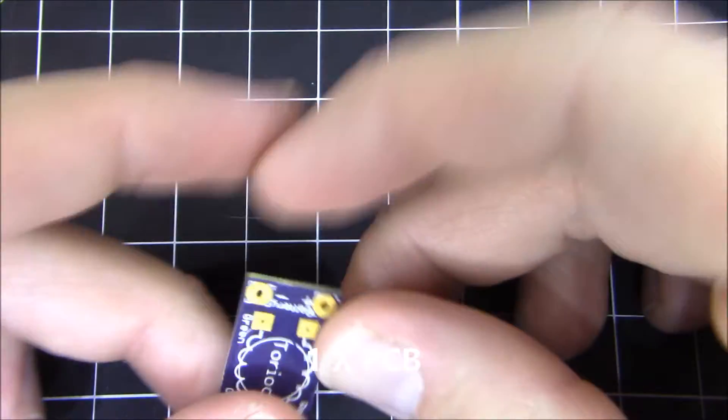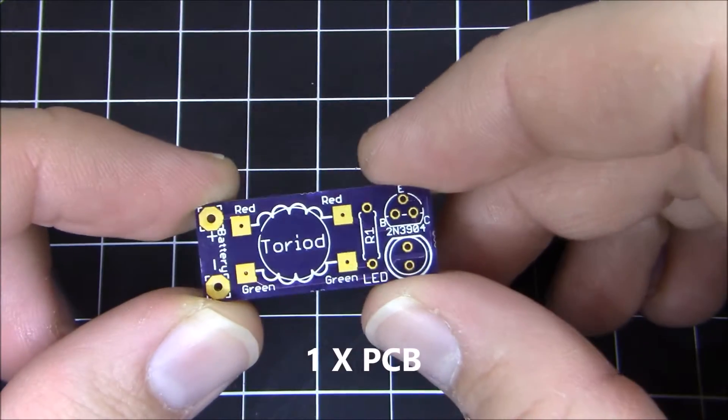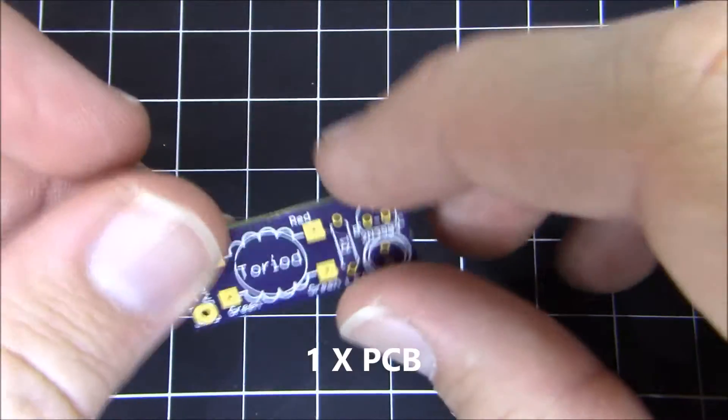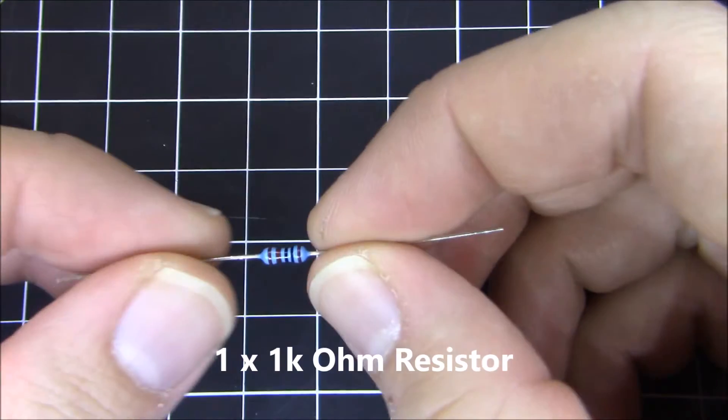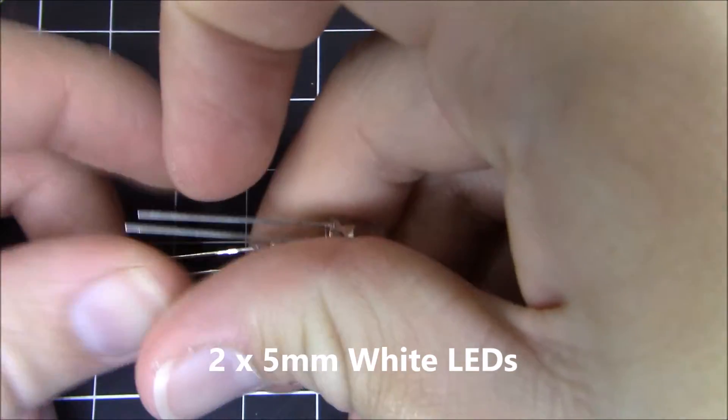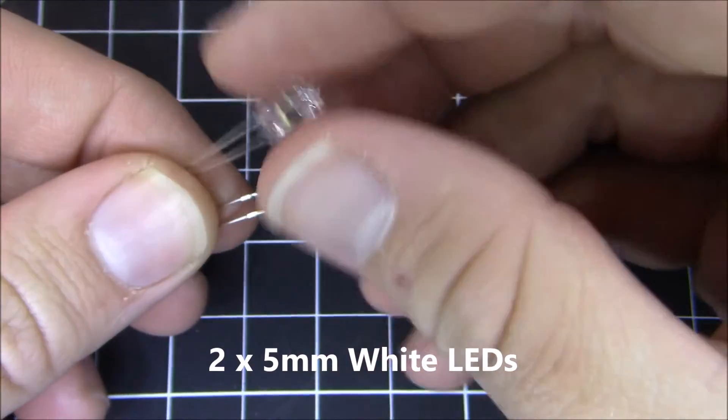And this is what comes in the kit. You get one PCB. It looks like this. It's purplish and gold. You put components on it. You get one 1k ohm resistor. You get two 5mm white LEDs. These are just regular white LEDs.